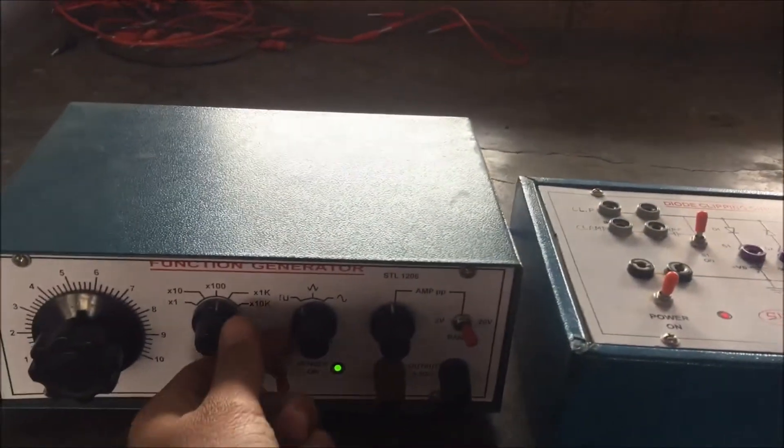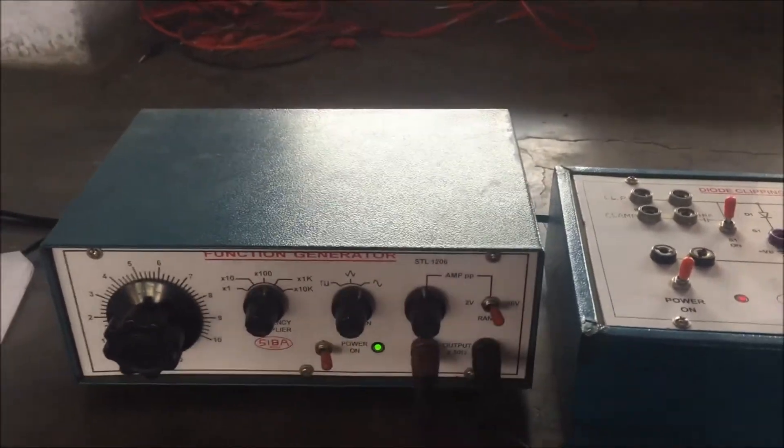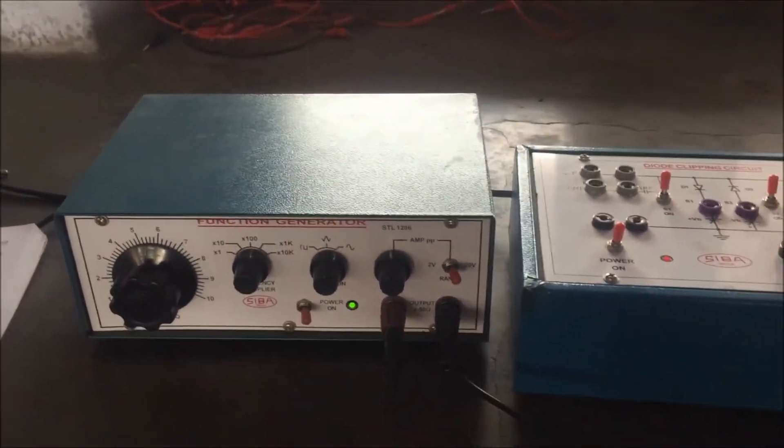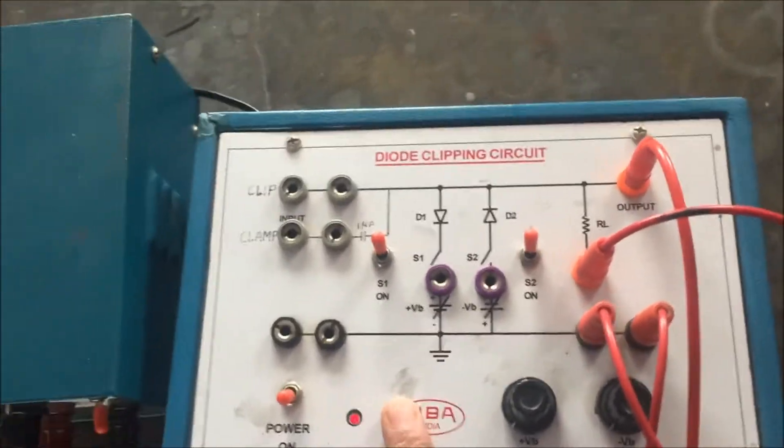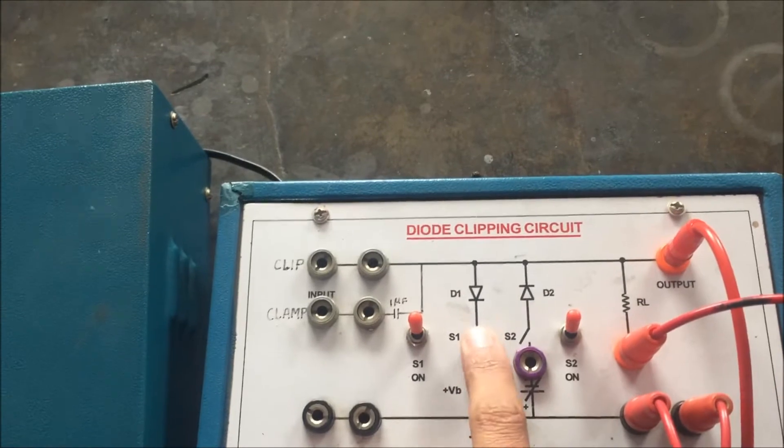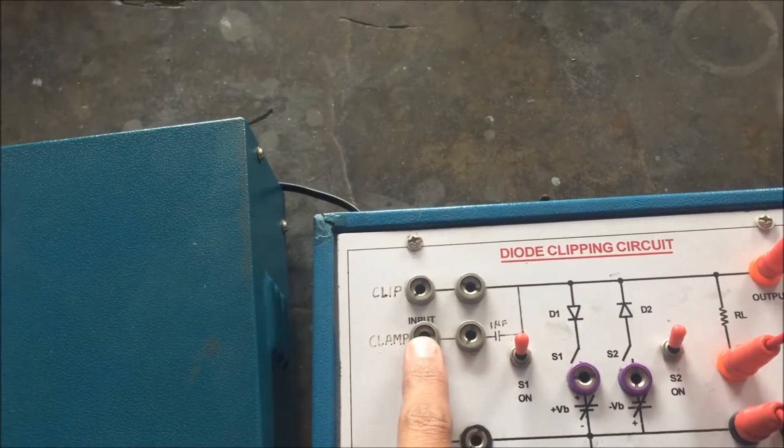So in this experiment, we will choose the sine waveform. Then next thing is the diode clipping circuit. So here you can see, we have two diodes, D1 and D2. And this is for clipping, this is for clamping.